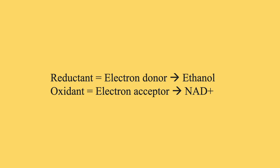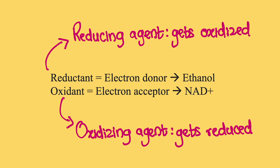In reactions where oxidoreductases are involved, there will be a reductant and an oxidant. The reductant is the electron donor and the oxidant is the electron acceptor. In the example provided, ethanol is the reductant and NAD+ is the oxidant. Make sure that you don't misunderstand the reductant and the molecule that gets reduced — the same applies to the oxidant and the molecule that gets oxidized. The reductant is the reducing agent, so it itself gets oxidized. The oxidant is the oxidizing agent, so it itself gets reduced.